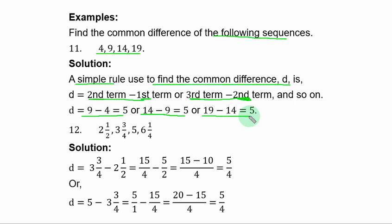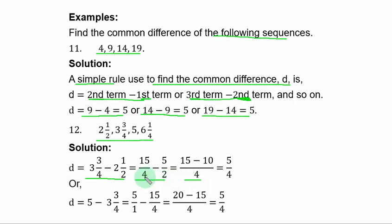You are not required to try all combinations — this is just to demonstrate that the common difference is constant throughout a given sequence. Example 12: the common difference is second term minus first term. Convert the mixed fractions to improper fractions, find the LCM which is 4, divide and subtract to get 5 over 4.